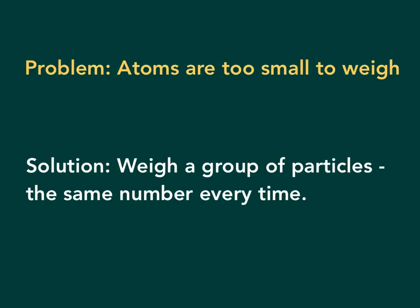We start out right away with a problem. These atoms that we want to weigh are too small to weigh. So the solution is, if we weigh a group of them and they have the same number every time, then we can compare that same number. The problem is, how do we get that same number?